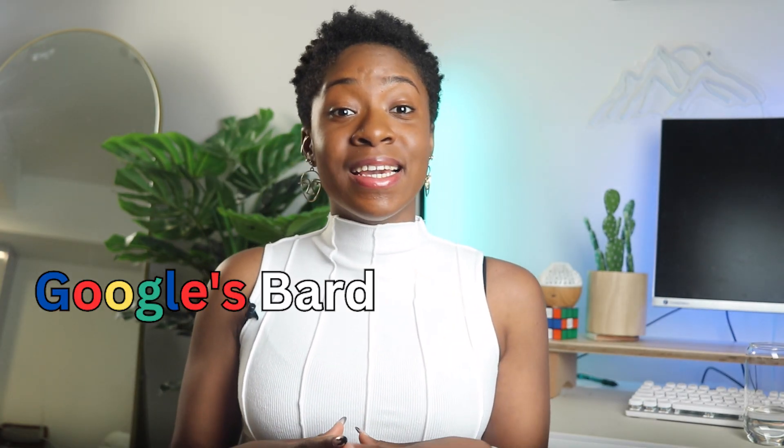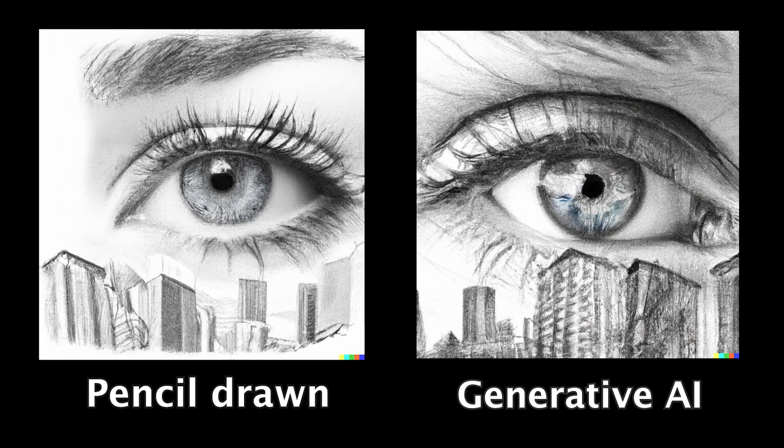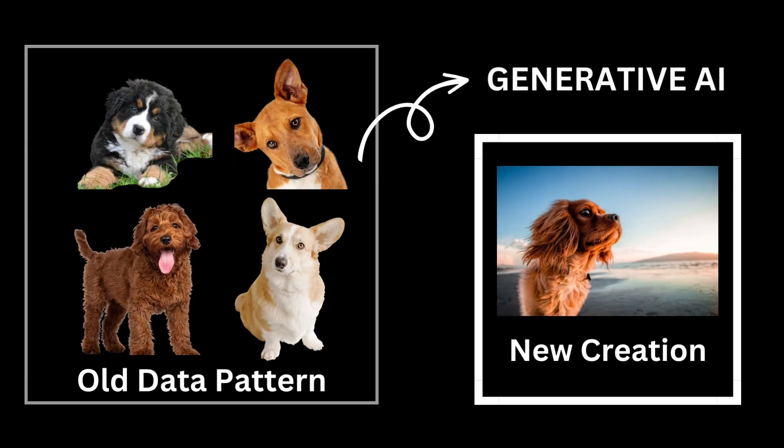Generative AI has been making waves in the tech world recently. Today, AI models like ChatGPT3 by OpenAI and Google's Bard can generate incredibly realistic text and images. Unlike other types of AI, Generative AI aims to create something new and original that hasn't been seen before, based on patterns and information learned from older or existing data.